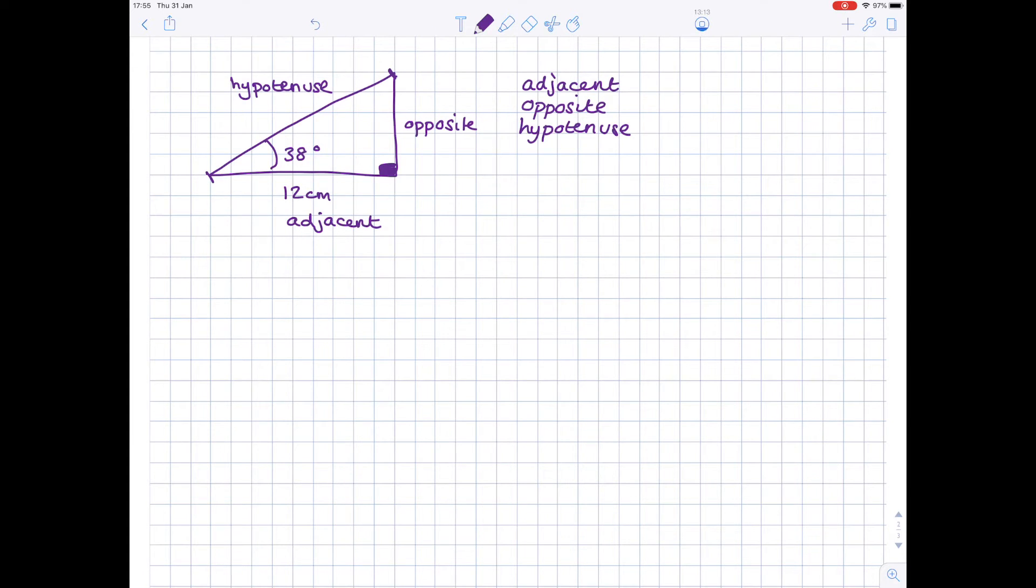Associated with labeling the sides you need to know the rules, and those are the trig rules. That is SOH CAH TOA, which is how I remember the order. That states that the sine of any angle is opposite over hypotenuse, the cos of an angle is adjacent over hypotenuse, and the tan of an angle is opposite over adjacent.